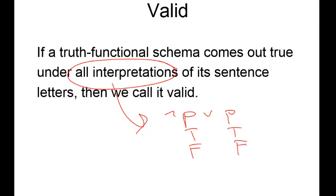If there were three variables, it would be 2 to the n — 2 to the power of 1 in this case, which is 2. So we only have two rows on the truth table: true and false.